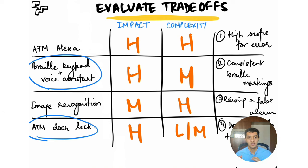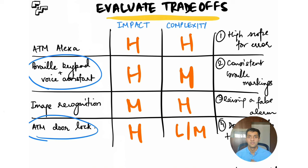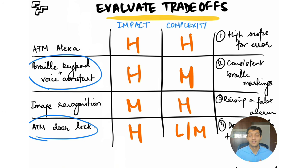One thing to note: you could have approached this question completely differently, prioritized different needs, and come up with different solutions — that's perfectly fine. The interviewer isn't checking if you're right or wrong, but how you approach a problem. In real life you may never design an ATM as a PM, but what interviewers want to see is whether you can stay calm and respond to ambiguous situations. The more you practice, the more natural it becomes — keep picking up design questions, solve them with this framework, and note where you need to improve. That brings us to the end of today's video on CIRCLES — hope you enjoyed it!